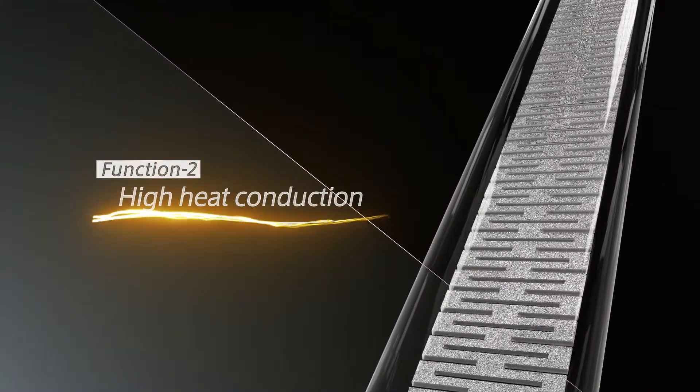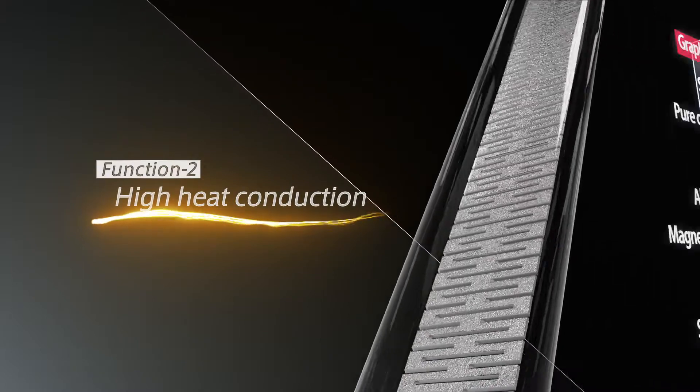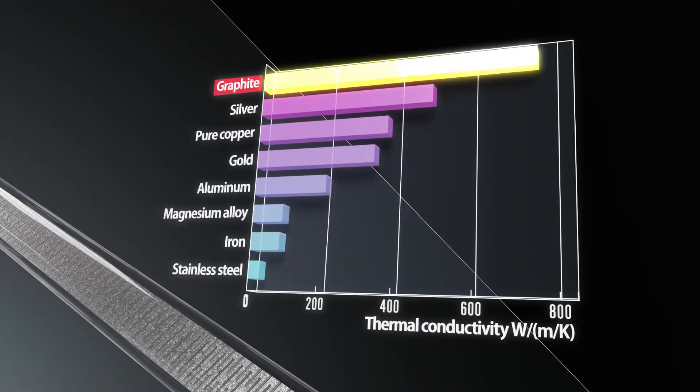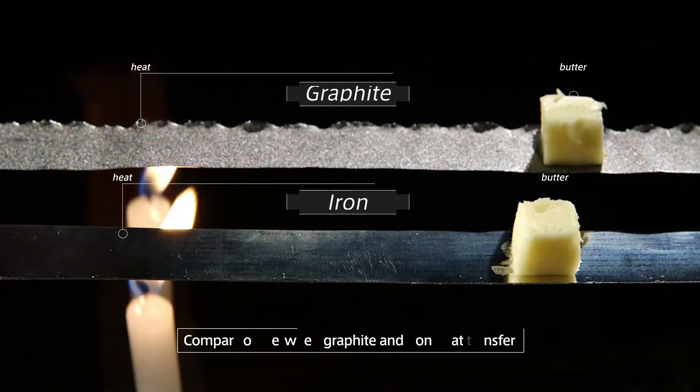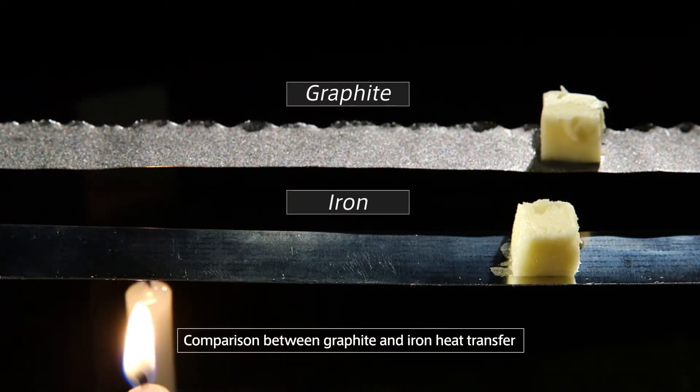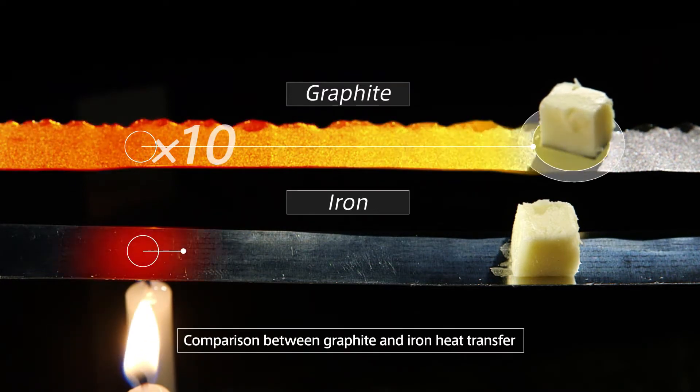Function 2: High heat conduction. The thermal conductivity of graphite is higher than gold, silver, and copper, and is 10 times that of iron.